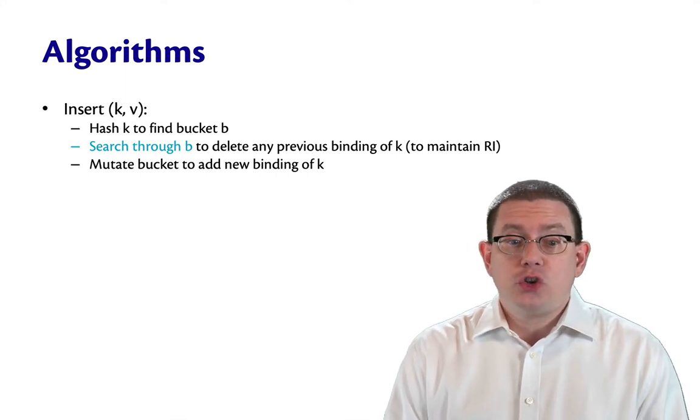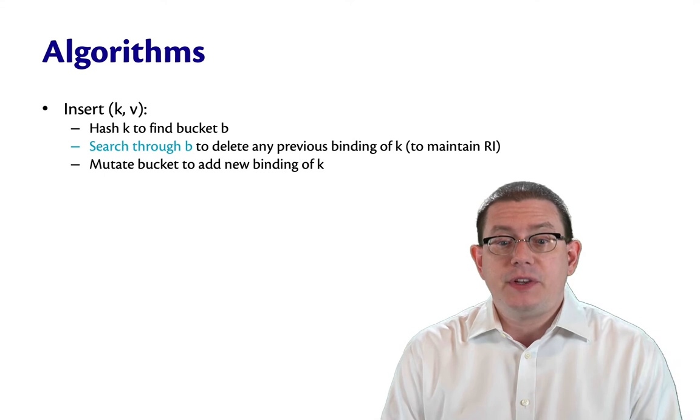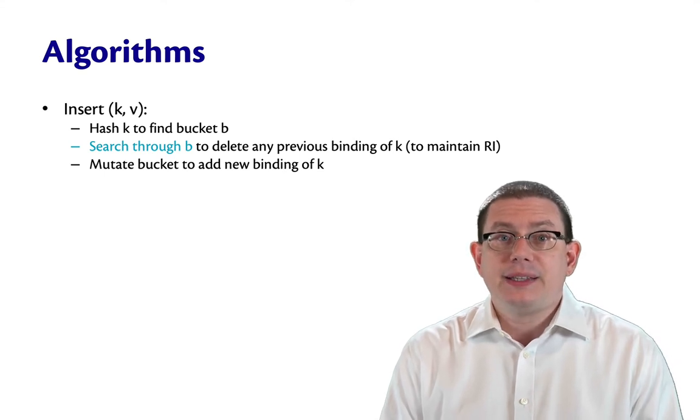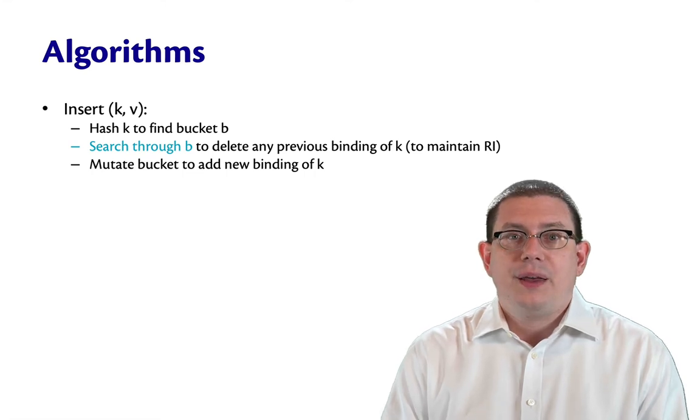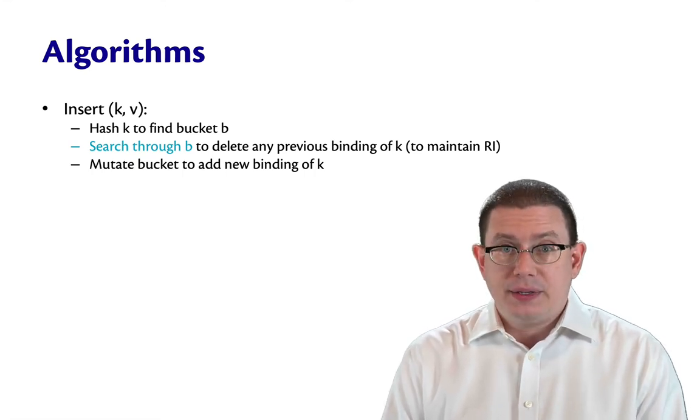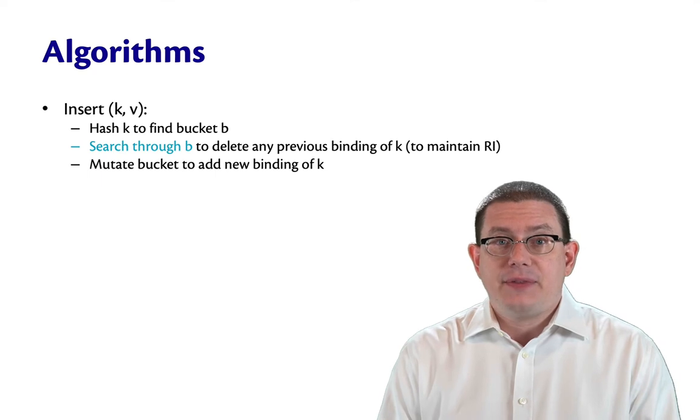Then we're going to have to search through that bucket to delete any previous binding of k. That's to maintain our representation invariant that no key is bound more than once. Then we will mutate the bucket to add the binding of k to v.